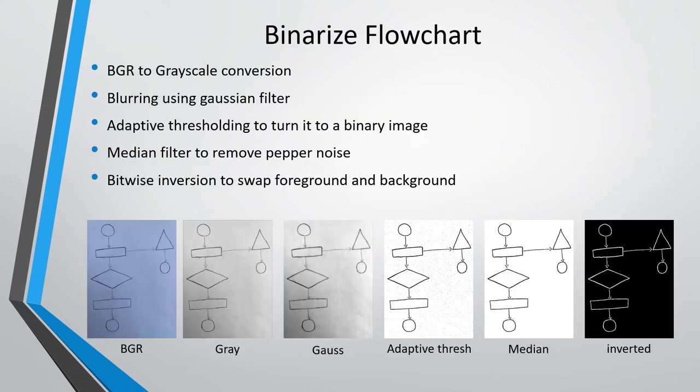The first step involves creating a binary image of the flowchart. This is important as it will make the process of separating the flowchart components from the background an easier task. To do this, the image is first converted to grayscale and then the image is blurred using a Gaussian filter. After that, a thresholding technique will have to be considered to turn it into a binary image. Due to the shadows that might be present on the flowchart and the varying contrast levels across different parts of the image, as you can see here, a global thresholding technique will not work well. Therefore, I chose adaptive thresholding for this application. After adaptive thresholding, there might be some pepper noise left on the image and to remove that, I used a median filter. And the final step is to do a bitwise inversion of the binary image.